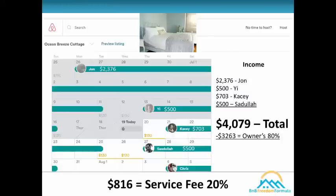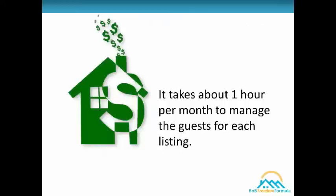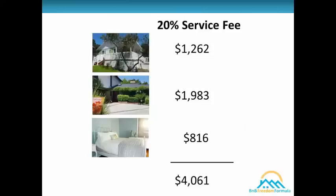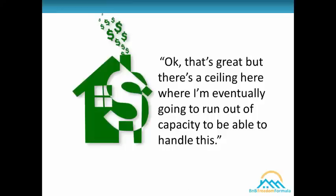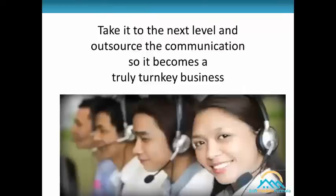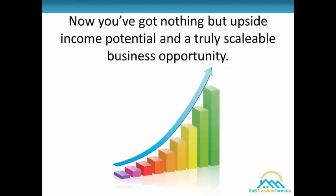The income fluctuates month to month, but you can see how easy it is. If you can make $1,000 per month on just one house, how many properties would you add — two, five, ten, maybe more? For those three listings it took about three hours to bring in a little over $4,000 for the month. And what if you could take it to the next level and outsource the daily management so it becomes a truly turnkey business? Now you've got nothing but upside income potential and a truly scalable business. My passion is to help people out of the rat race and into financial freedom, and the best way I know to do that is to show people how to set up an Airbnb business using all my tools, systems, and strategies to create multiple streams of income.